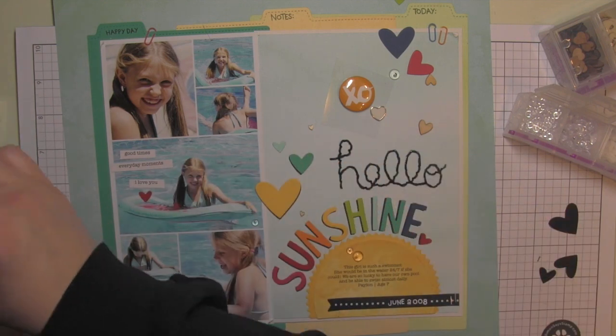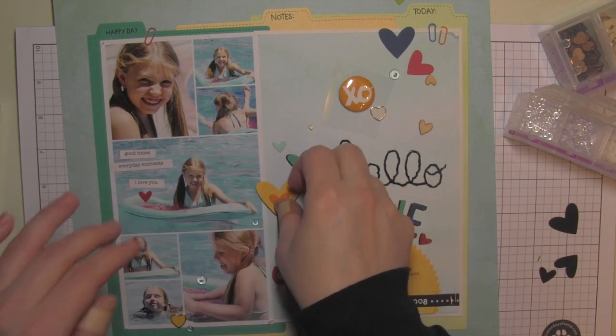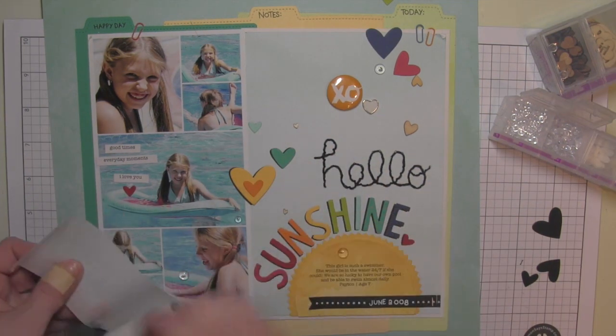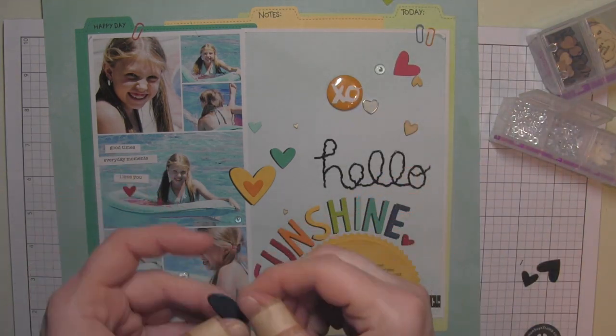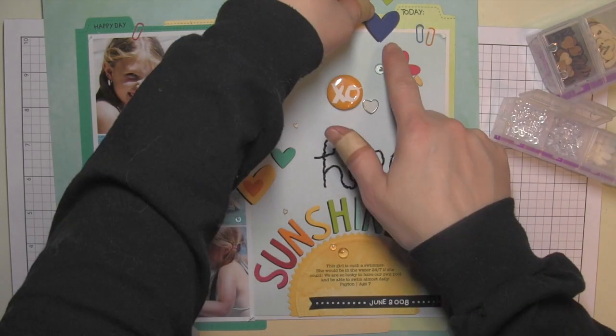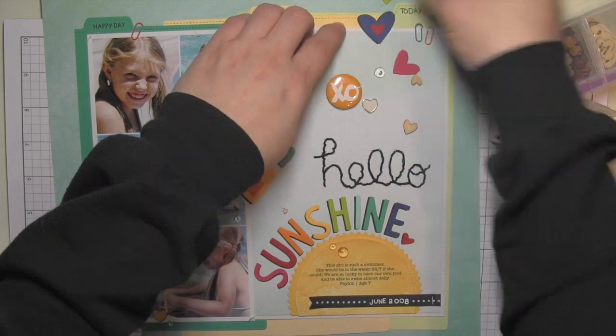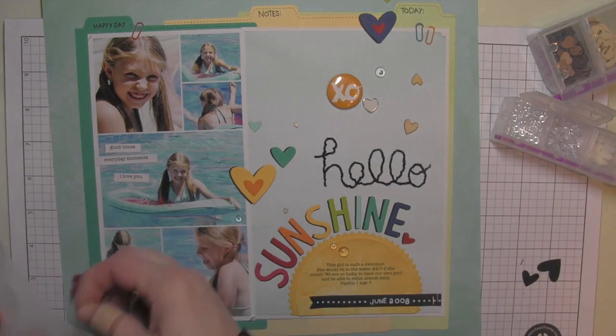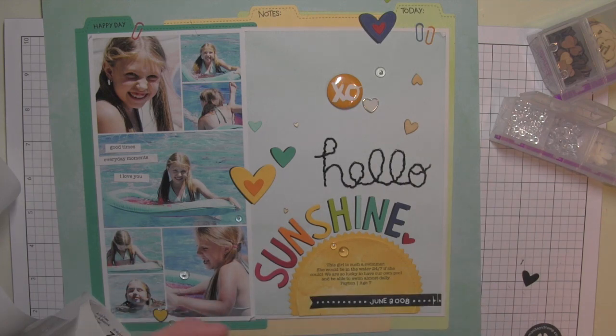I will add a few of these clear droplets from Pretty Pink Posh. Layering some of the stickers and embellishments over the photos kind of ties the whole thing together. The embellishments go from that bottom left to the top right basically. I will finish adding these, layer some of the hearts one on top of another. Some are going to be by themselves.